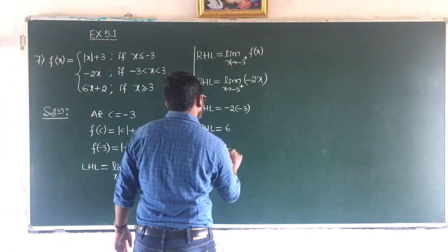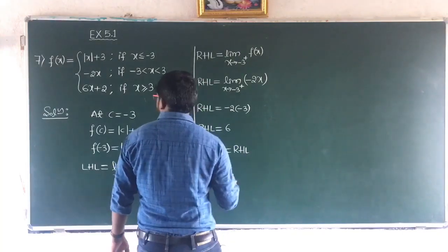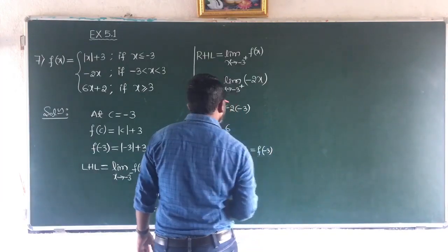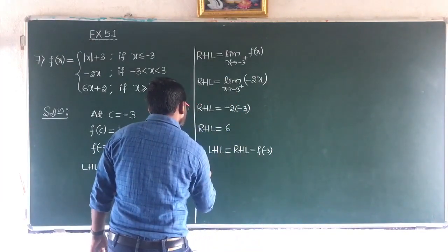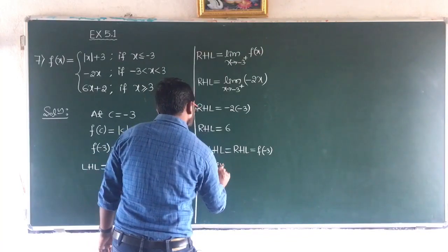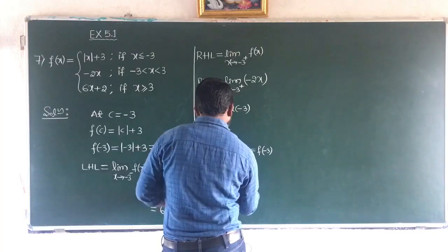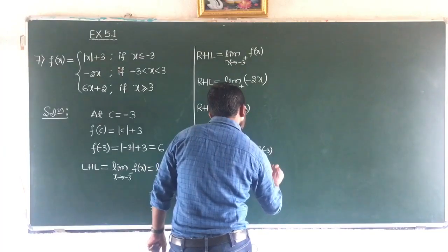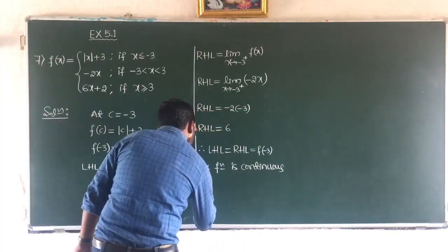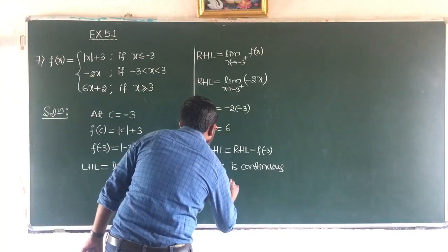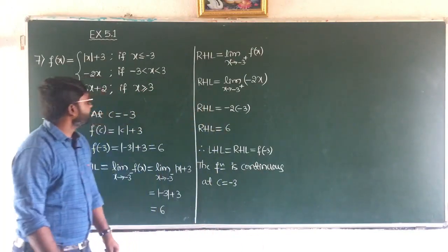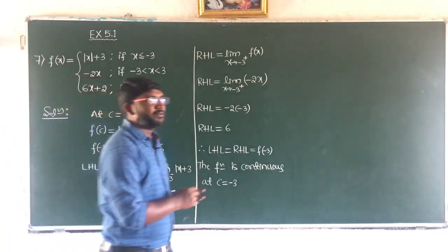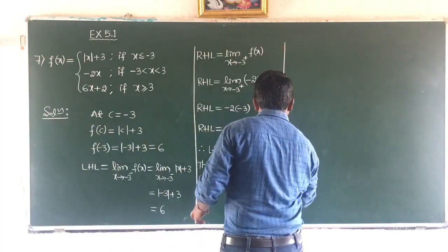LHL equals RHL equals f(minus 3), so the function is continuous at c equal to minus 3. Now we will have to check the continuity at c equal to plus 3. Again, we go for LHL, RHL, and the value of the function.